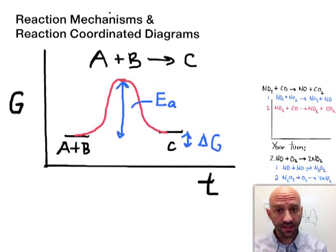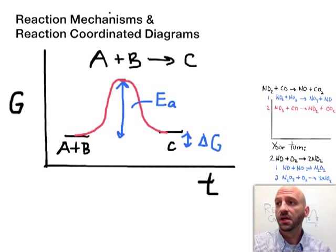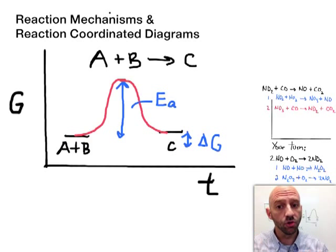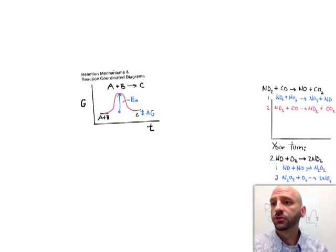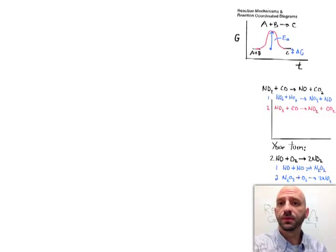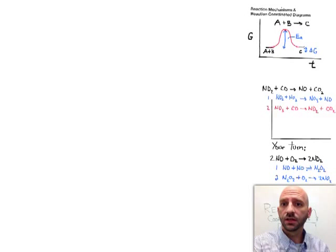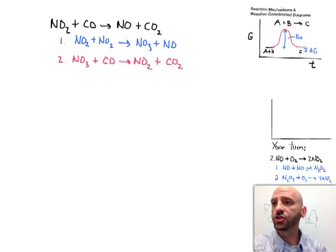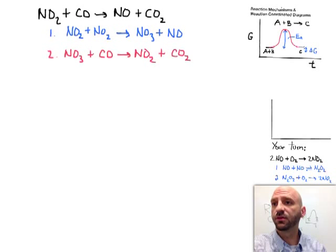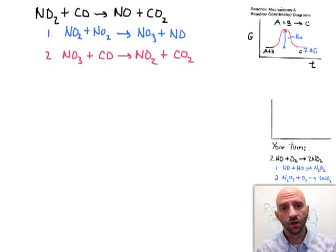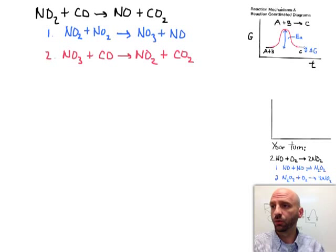What we're going to do is take an actual mechanism we've already looked at before and chart it out in a reaction coordinate diagram. I'm going to get our first bit here out of the way, and we're going to take a look at this reaction mechanism that we've already seen before. We talked about this in a previous video where we have NO2 reacting with CO to make NO and CO2.